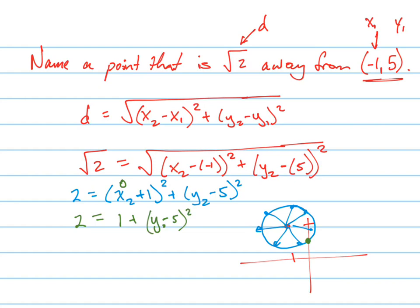Now let's solve this equation algebraically. I'm trying to get y by itself. Subtract 1 from both sides. Then get rid of the square by taking the square root — and don't forget that gives plus or minus. So we actually have two answers.